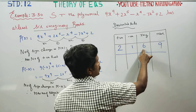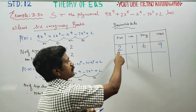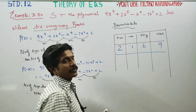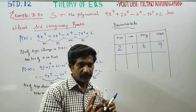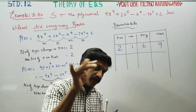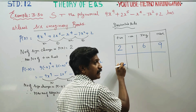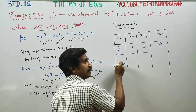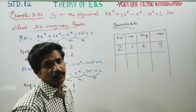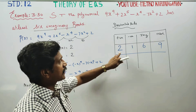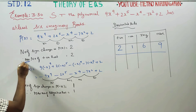If we consider all cases, the maximum positive roots can be 2, and the maximum negative roots can be up to 1. This is the rule — the maximum number of roots in each case follows Descartes' Rule of Signs.